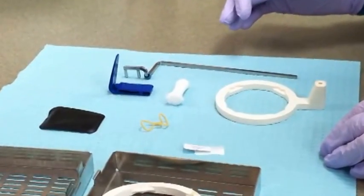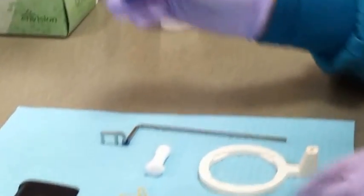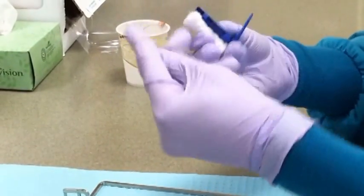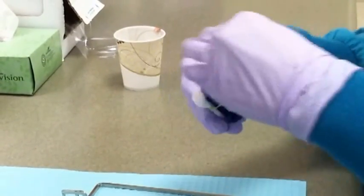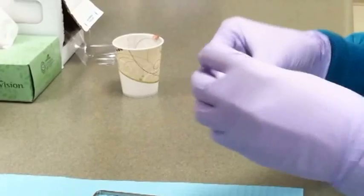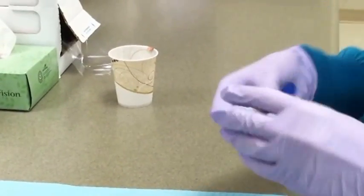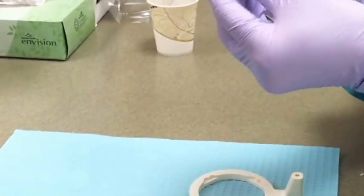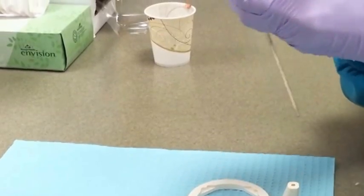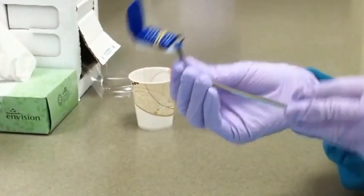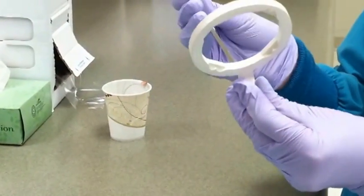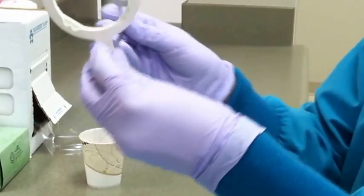We assemble them by using the blue bite piece and attaching a cotton roll with a rubber band. We then connect the bite piece to the metal rod. The anterior aiming ring is placed on the other end so that the film is centered in the middle.